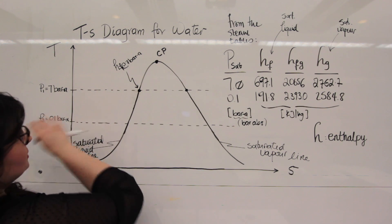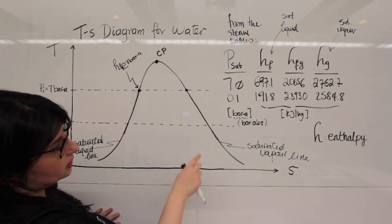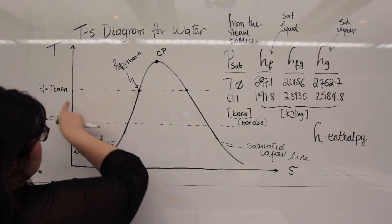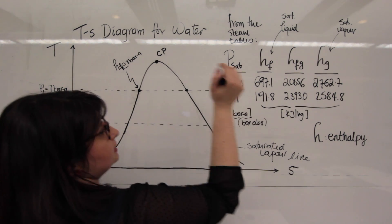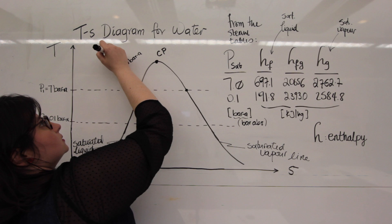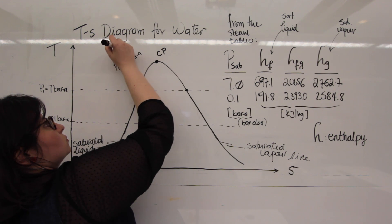So, theoretically, if we say, and of course, this is not to scale, but if we assume that this is at 7, then that would be what? It would be 697.1 kilojoules per kilogram.